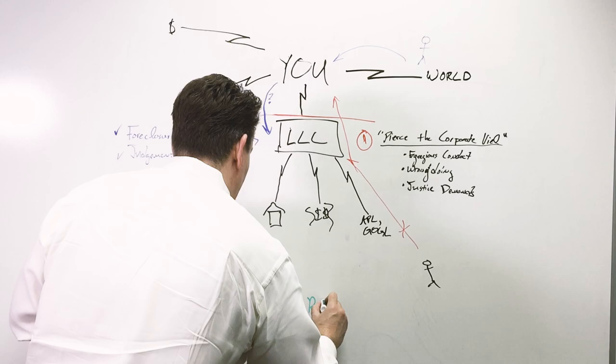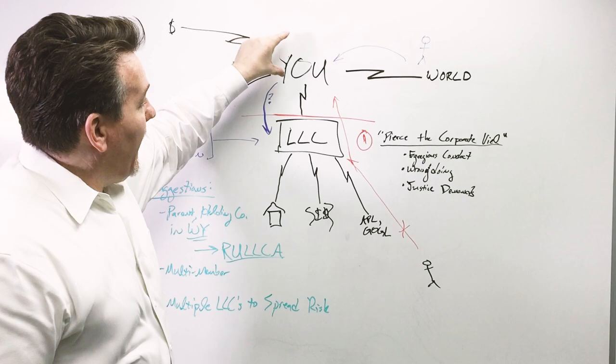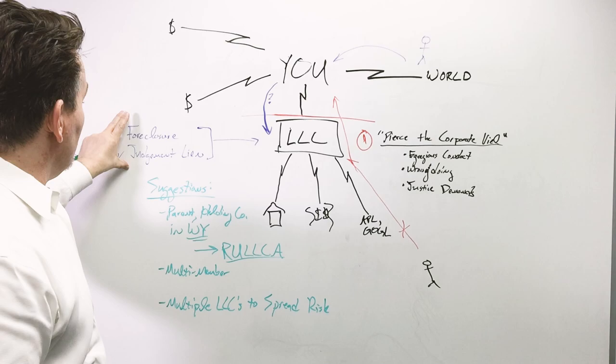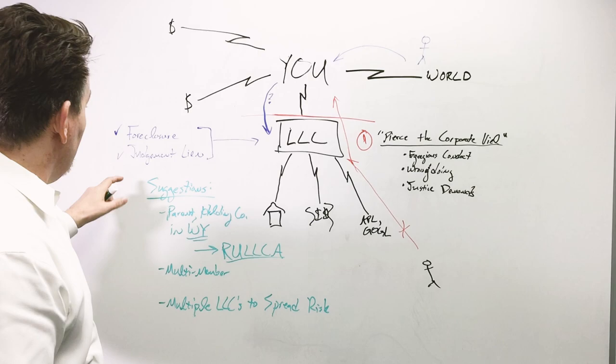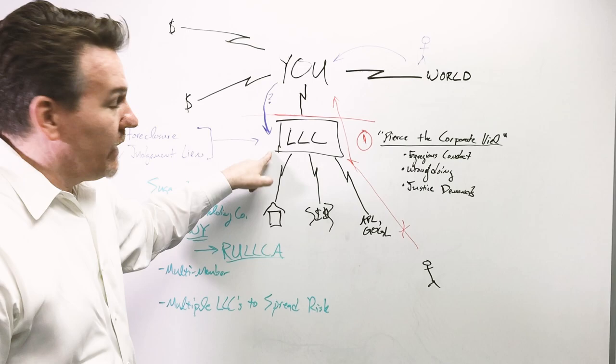So in summary, if you have a lot of assets in the LLC and you don't have a lot of assets outside, you're worried about people coming after the LLC through you because you hurt somebody. You care about foreclosure and judgment liens. You don't care about piercing the corporate veil. You want to have a parent company that might own your operating companies, and you also want to spread your assets out amongst various LLCs. Don't put all your eggs in one basket.